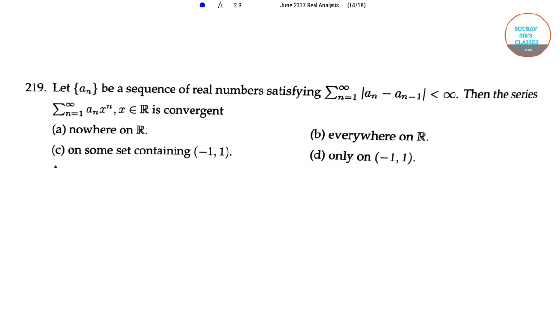The next question is: let {a_n} be a sequence of real numbers satisfying Σ(n=1 to ∞)|a_n - a_(n-1)| < ∞. Then the series Σ(n=1 to ∞)a_n·x^n, where x ∈ ℝ, is convergent: (a) nowhere on ℝ, (b) everywhere on ℝ, (c) on some set containing (-1,1), (d) only on (-1,1).